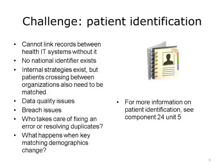And who takes care of the problems? What if you find an error? What if you find a duplicate? What if you find two patients incorrectly linked together? How are the duplicates merged or the incorrectly joined separated? How is that going to get resolved within an organization? How is that going to get resolved between organizations? What happens when key matching demographics change — when the name changes, or even if a gender changes? For more information on patient identification, please go to Component 24, Unit 5.